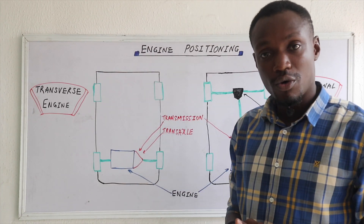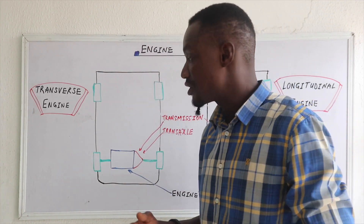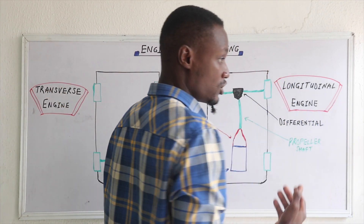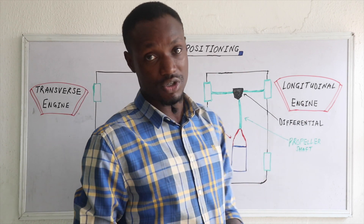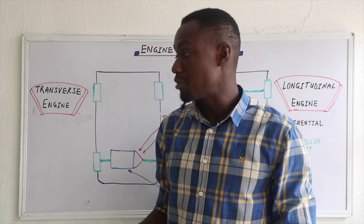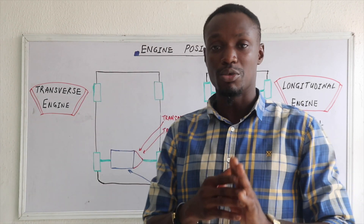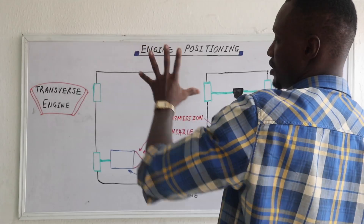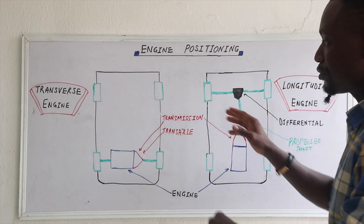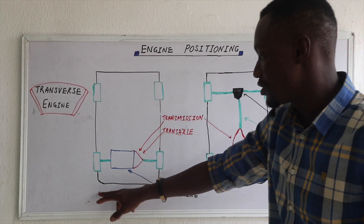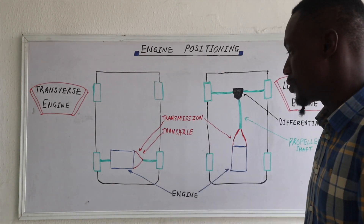We have two types: the transverse engine positioning and the longitudinal engine positioning. The first I'm talking about is the transverse, which is the most common. This is the vehicle, this is the rail of the vehicle, and this is the front of the vehicle.